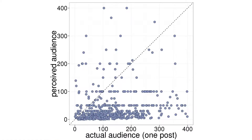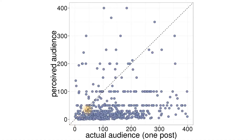Here's an example of one of the first scatter plots that we did looking at this. On the x-axis is how many people actually saw that post, and on the y-axis is how many people our survey respondents guessed saw the post. If they guessed perfectly accurately, their guess would fall along this dotted diagonal line — that's the perfect accuracy line.